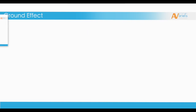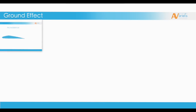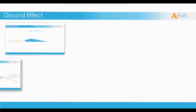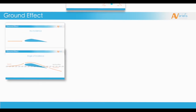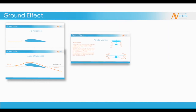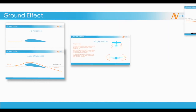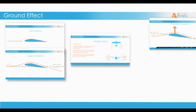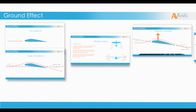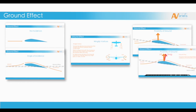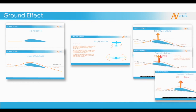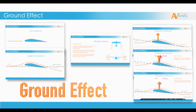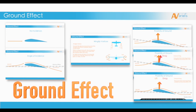So this is how ground effect is created, how it works, and how it affects the aerodynamics of the airplane. It's possible because of incidence and the angle of incidence, proximity of ground, wingtip vortices, and the lift vector changing direction slightly. Thanks for watching and safe skies from Ave Briefs.